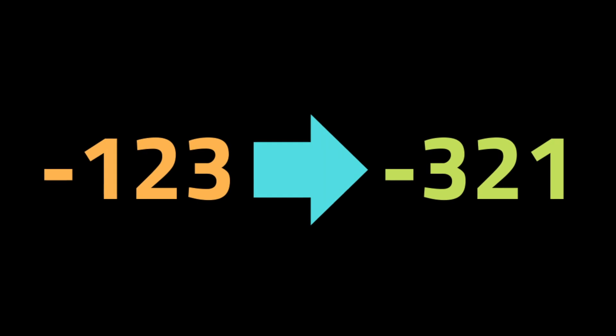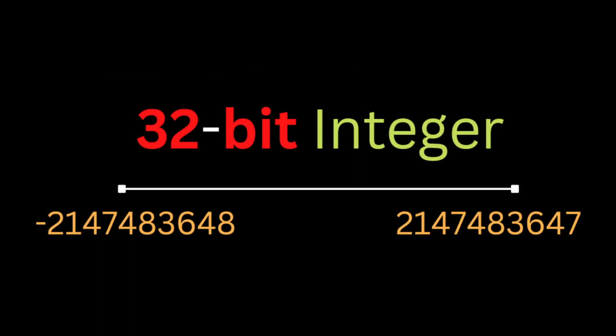First, in computer science a 32-bit integer is a data type that can represent a wide range of whole numbers from a minimum to a maximum value. This means if the input integer is less than minus 2 to the power of 32, or greater than 2 to the power of 32 minus 1, it is not a valid 32-bit signed integer.